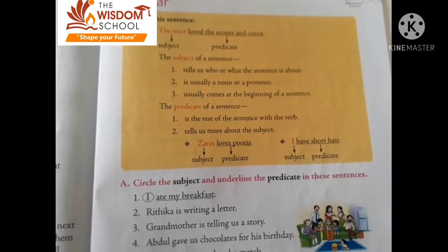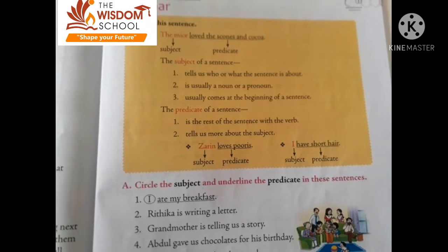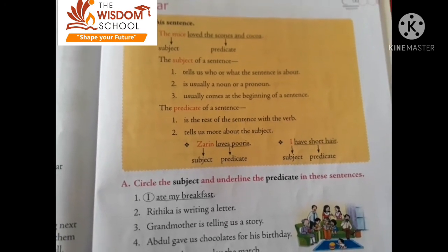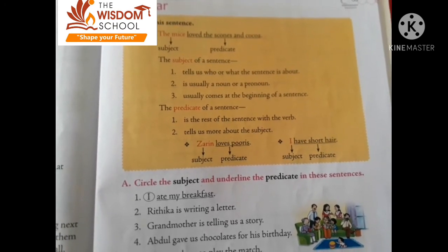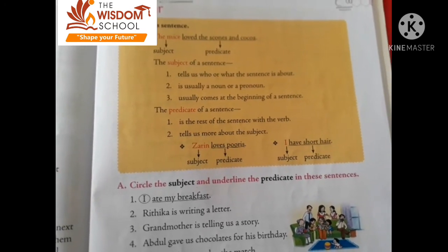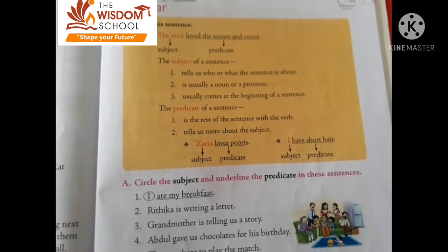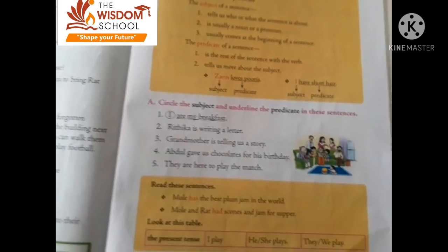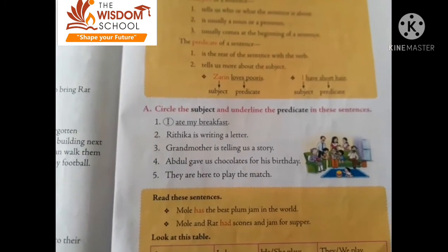'I have short hair.' Here 'I' is the subject, और 'have short hair' predicate है। Now we will do the exercise.